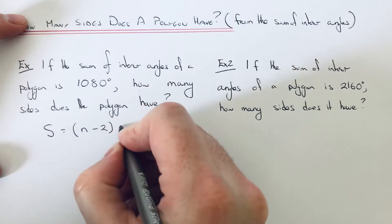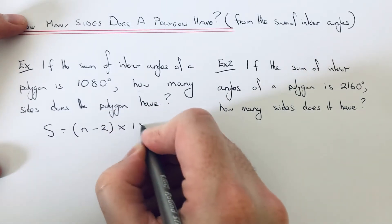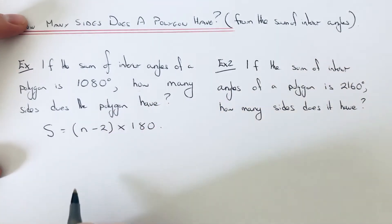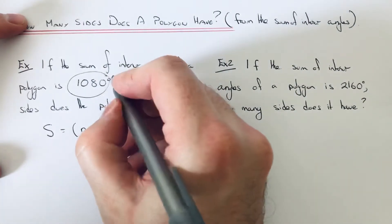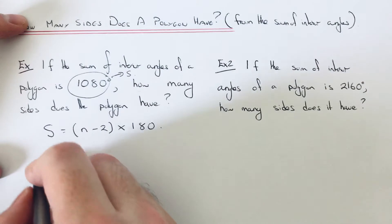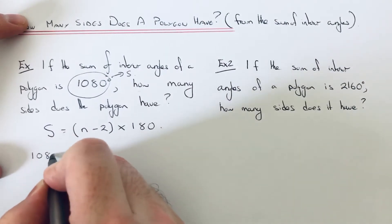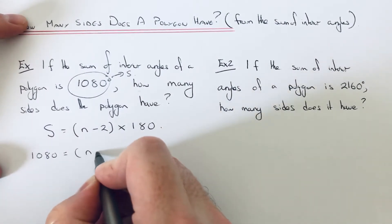So in the question, we're given what S is. We've got 1080 is equal to n minus 2 times 180.